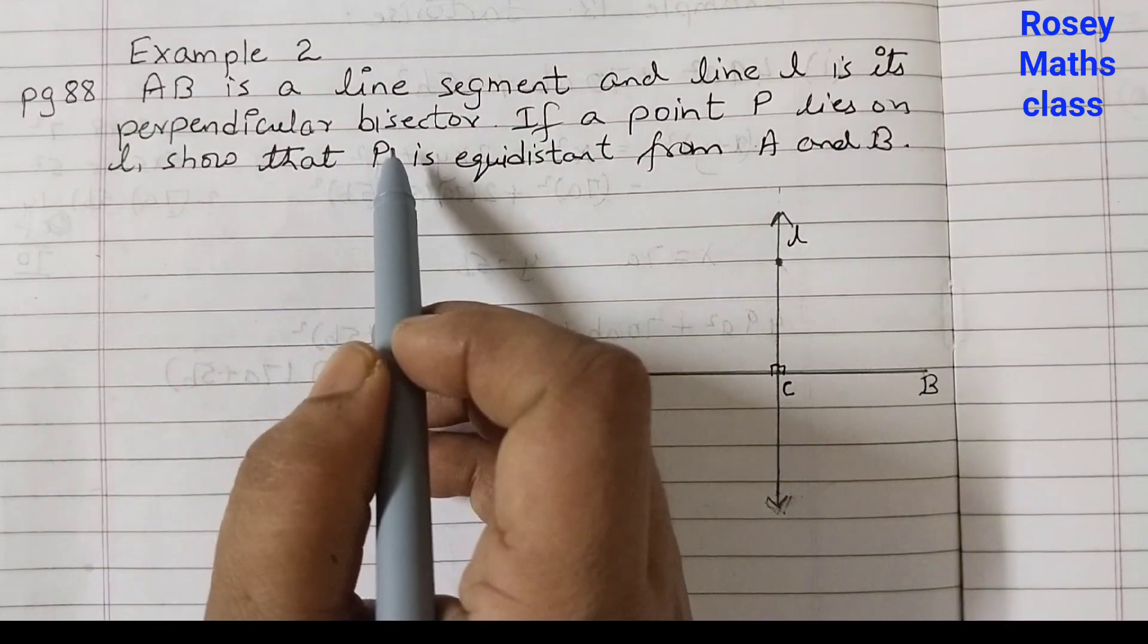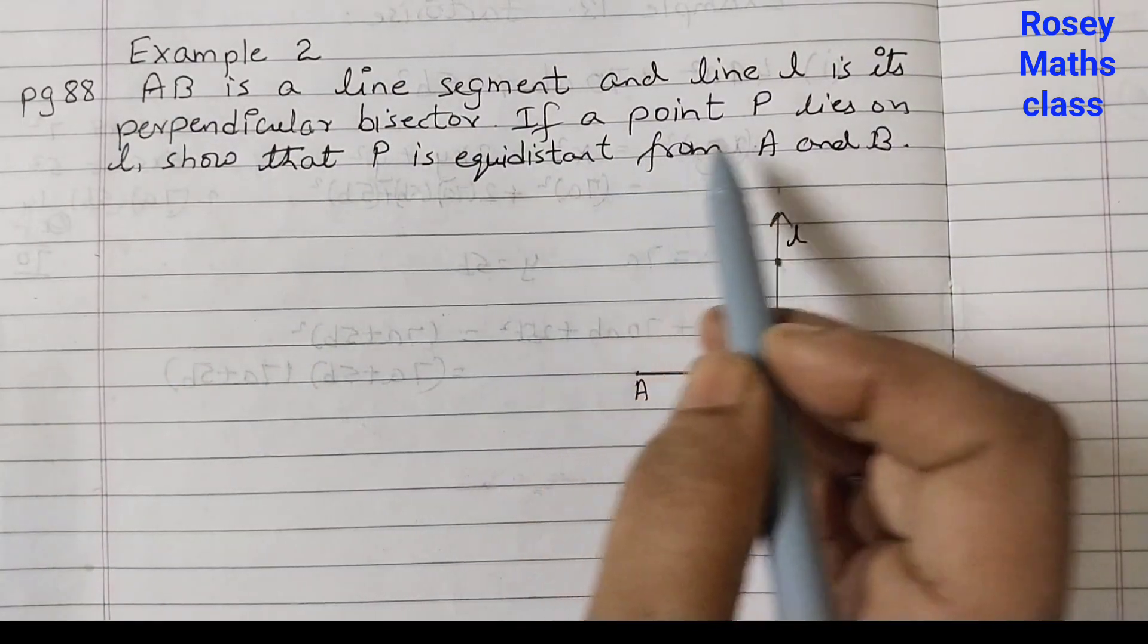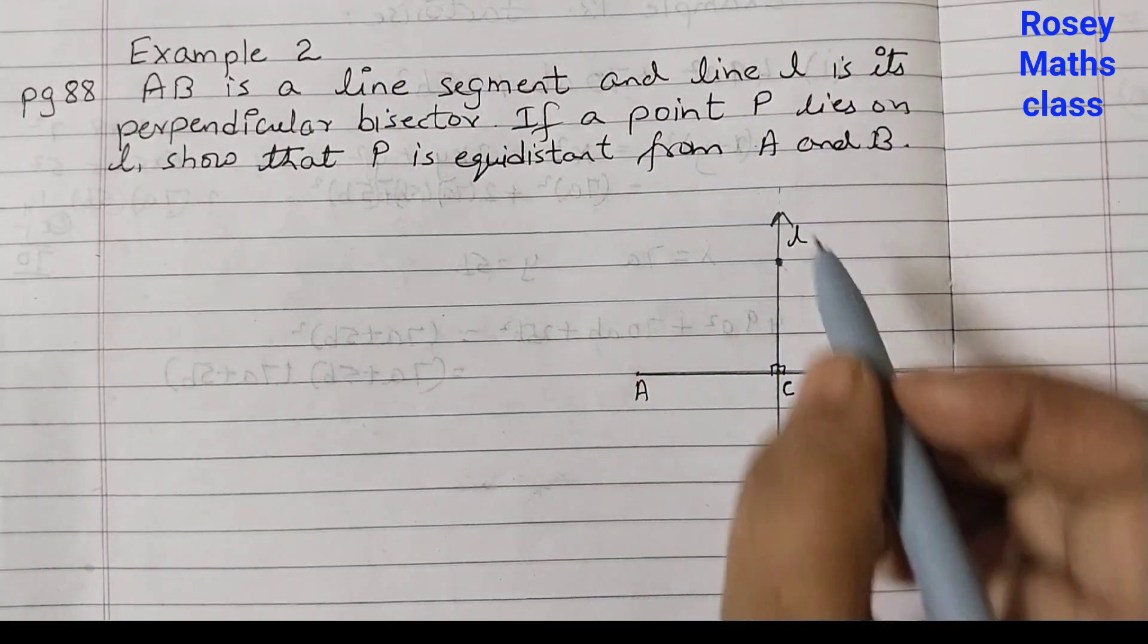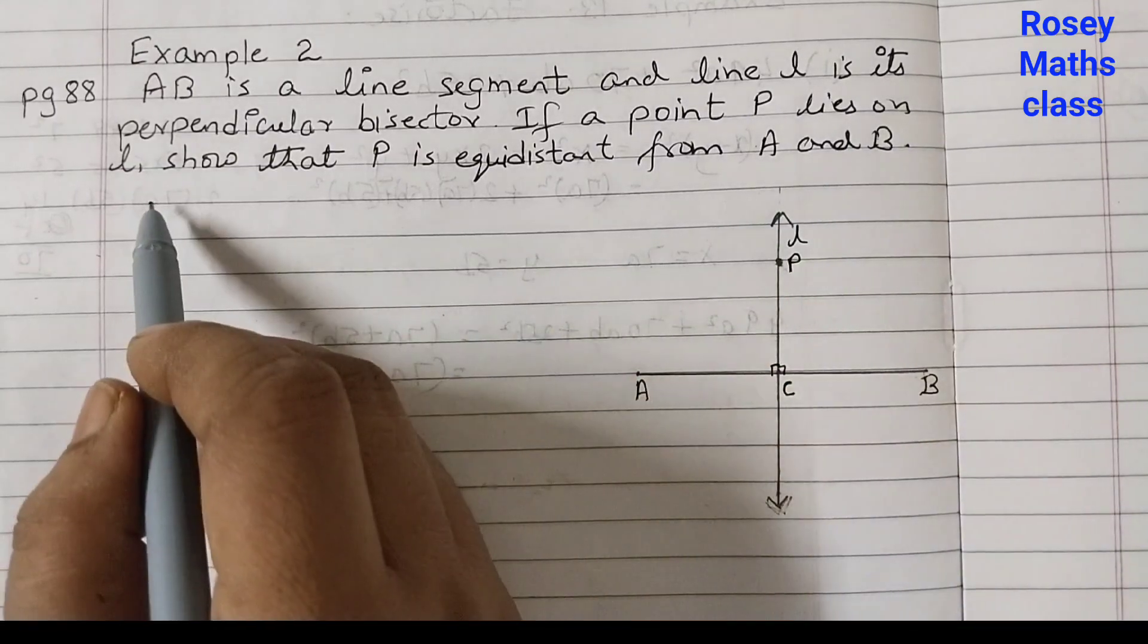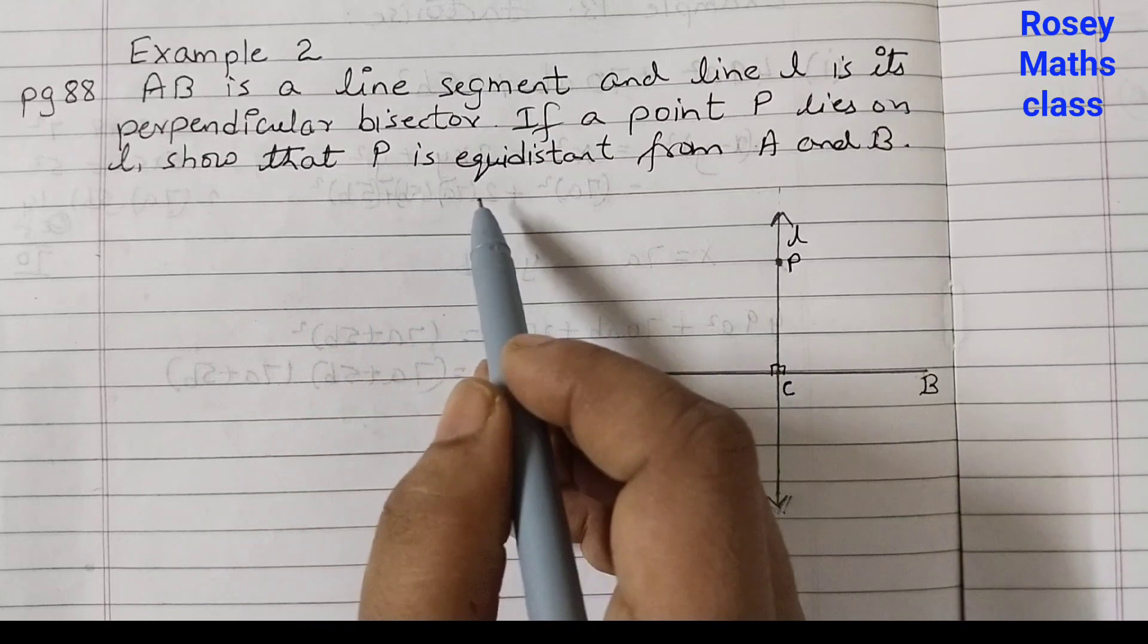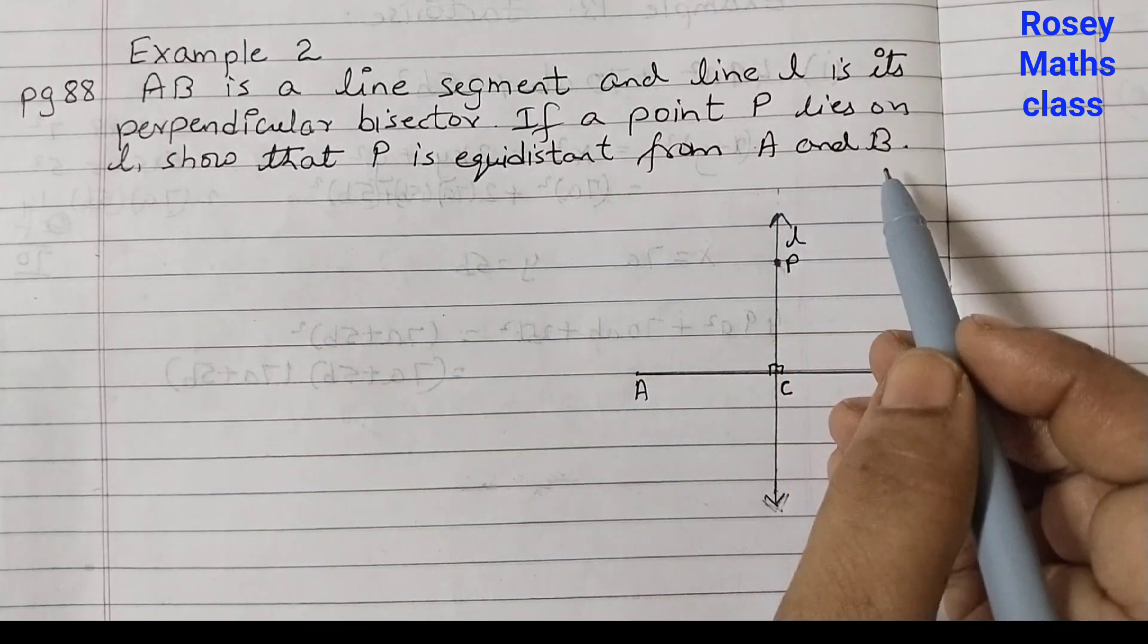If a point P, there is a point P here, you can take any point, lies on L, show that P is equidistant from A and B. We need to show that this point P is at equal distance from A and B.